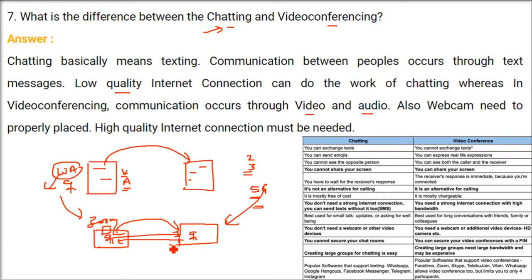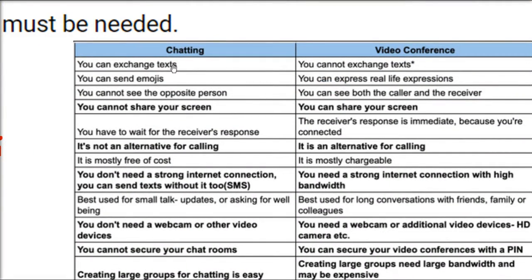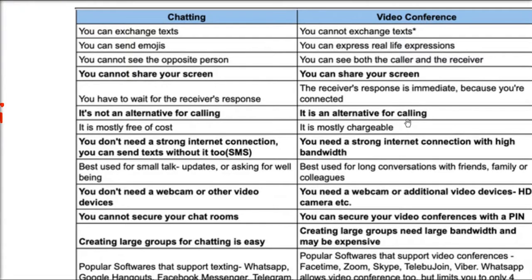You also need an audio device, which is normally already embedded in your device. In chatting you send text and emojis. In video conferencing you can exchange text too, but video conferencing is not primarily about text — it's about talking face to face. In video conferencing you see people with real-life expressions, like two people are together. Both caller and receiver are seen on video. In chatting you cannot share your screen; in video conferencing you can share the screen and work on another screen.